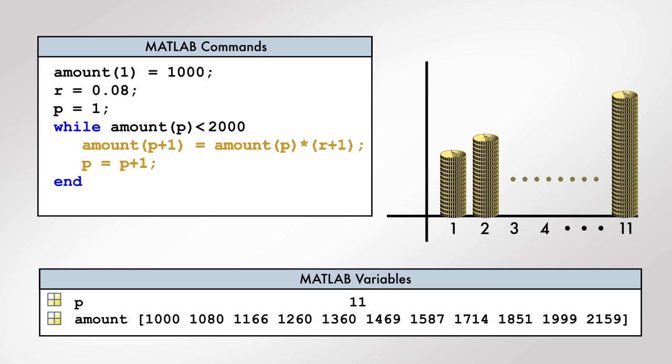We should make sure that the condition will evaluate to false at some point during execution. Otherwise, the while loop will never terminate. At the end of the while loop, the value of the variable P is 11, thus the original amount exceeds $2,000 at the beginning of the 11th year.